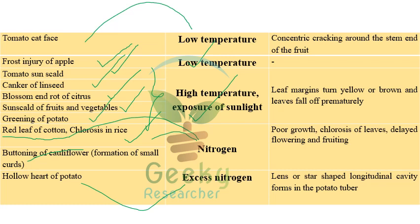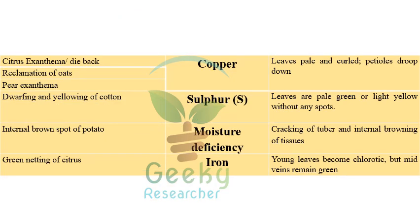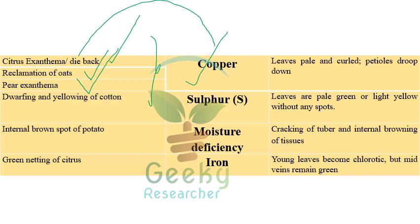Excess nitrogen deficiency causes hollow heart of potato. Copper deficiency causes citrus exanthema (dieback) and reclamation disease of oats. Sulfur toxicity causes dwarfing and yellowing of cotton. Internal brown spot of potato is caused by moisture deficiency. Green netting of citrus is caused by iron deficiency.